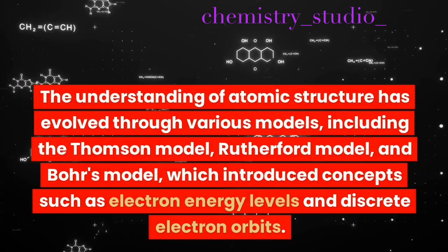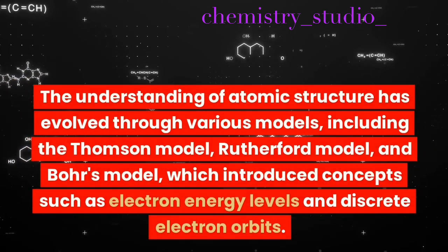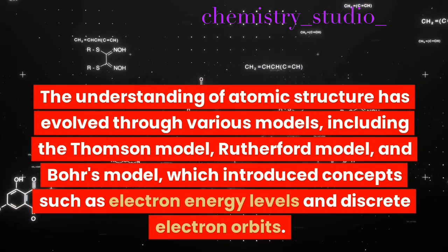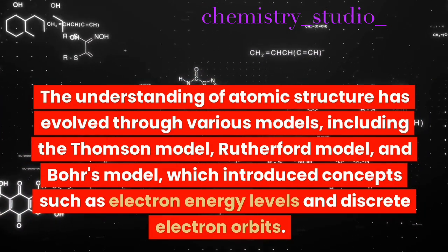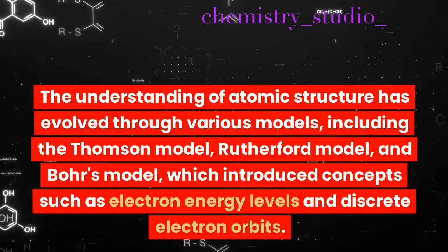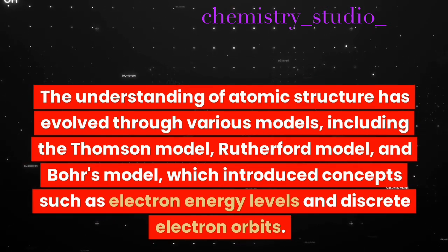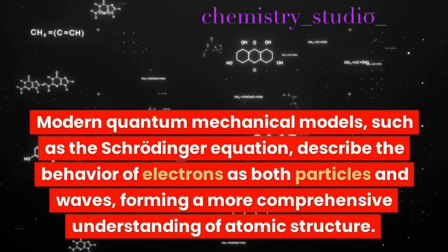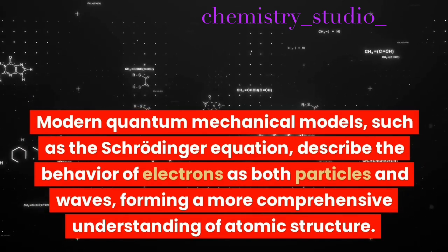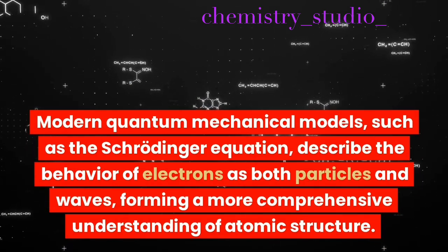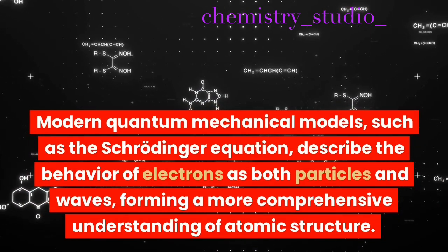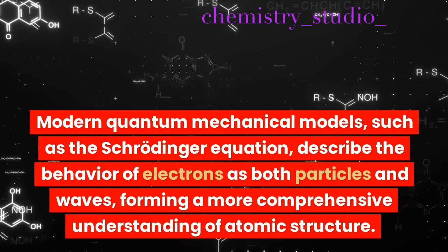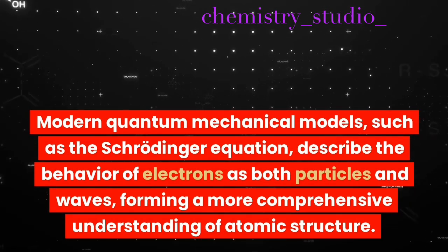The understanding of atomic structure has evolved through various models, including the Thomson model, Rutherford model, and Bohr's model, which introduced concepts such as electron energy levels and discrete electron orbits. Modern quantum mechanical models, such as the Schrödinger equation, describe the behavior of electrons as both particles and waves, forming a more comprehensive understanding of atomic structure.